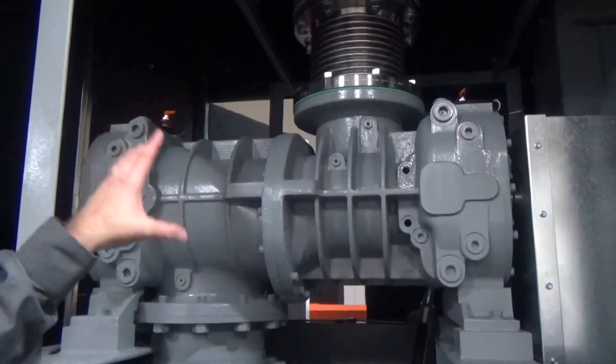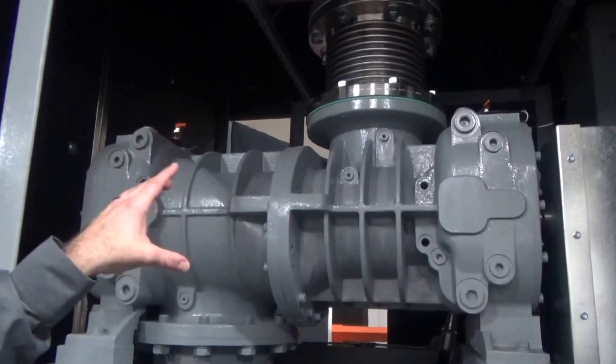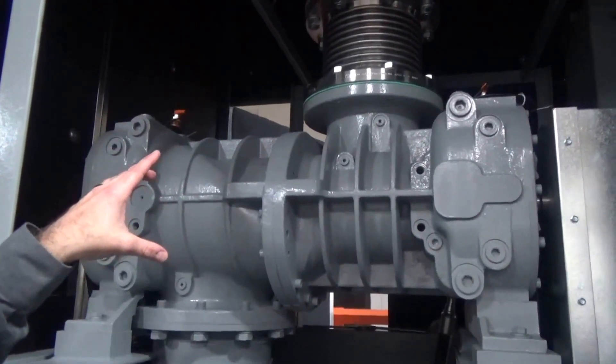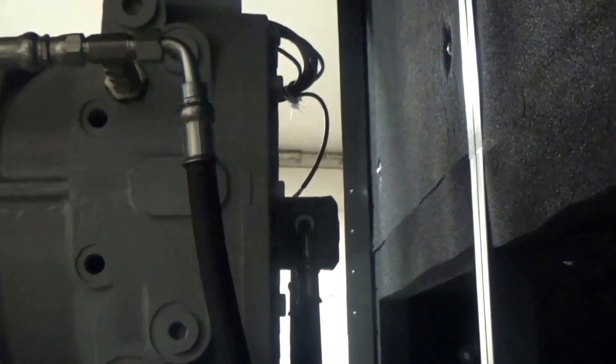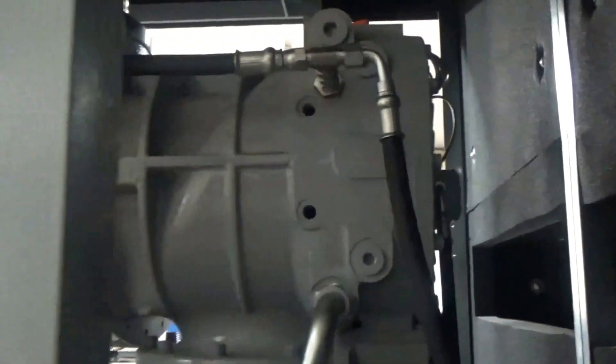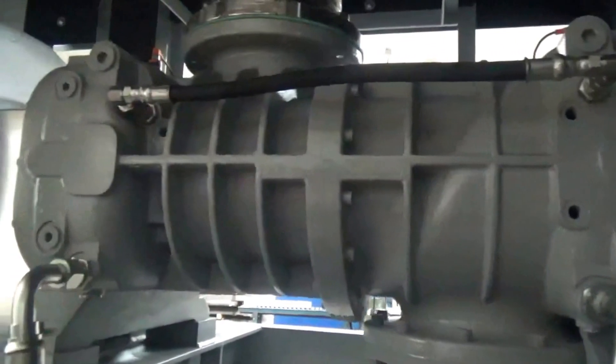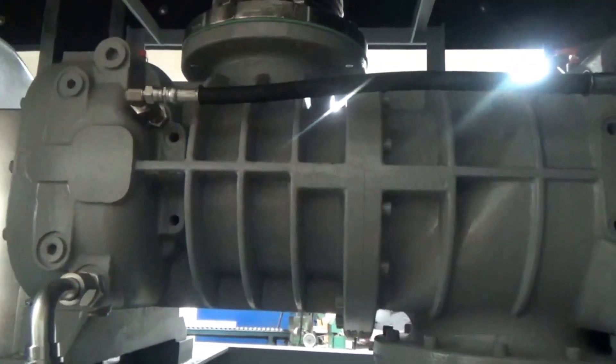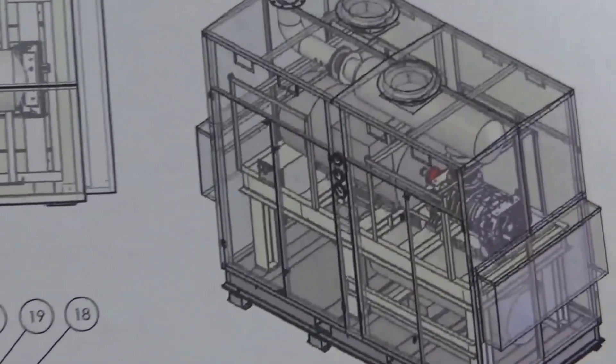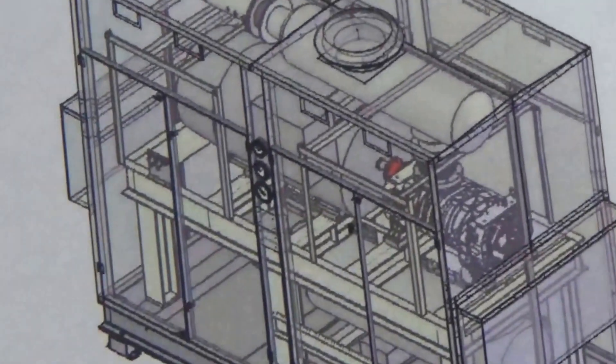This is the new Gardner Denver RC3 high pressure blower. Normal blowers are only rated up to 19 to 20 psi. This blower will go up to 36 psi. This will have a lot more opportunities for more dense conveying applications, usually where a compressor would have to be used. Now we can look at using a high pressure blower.